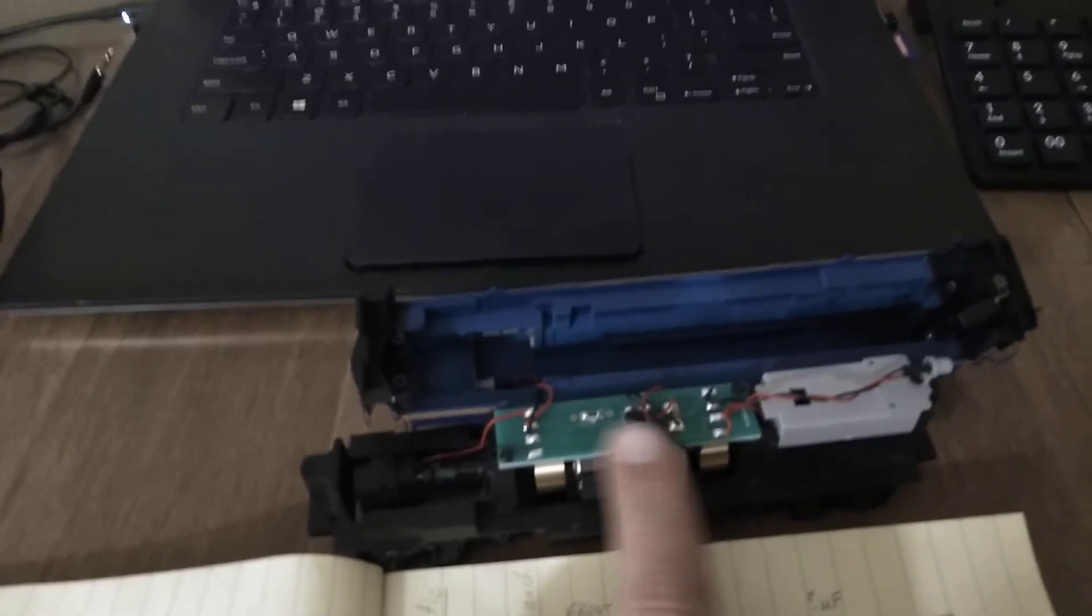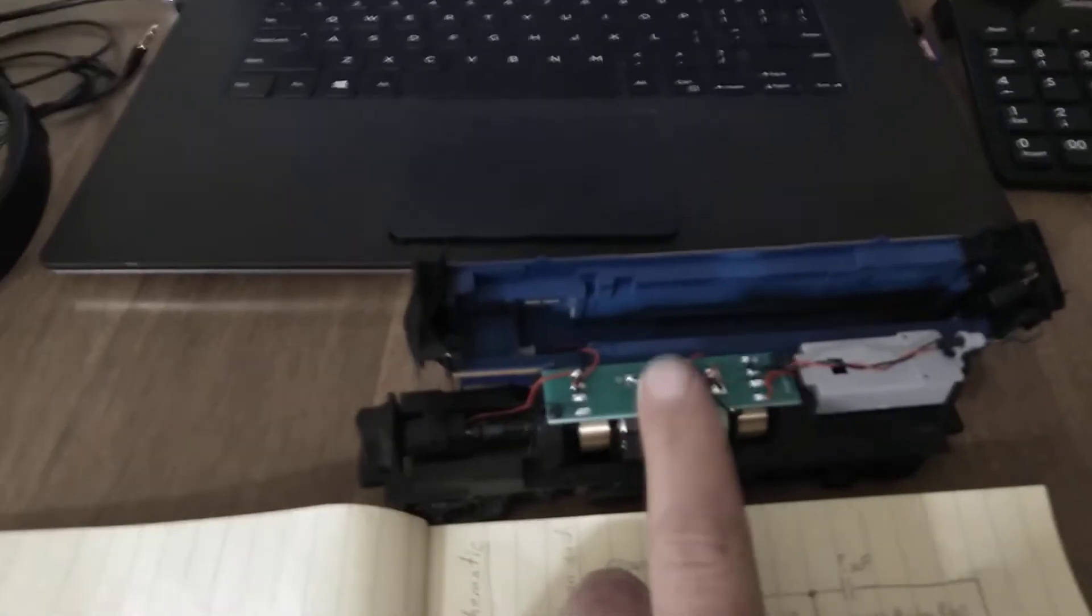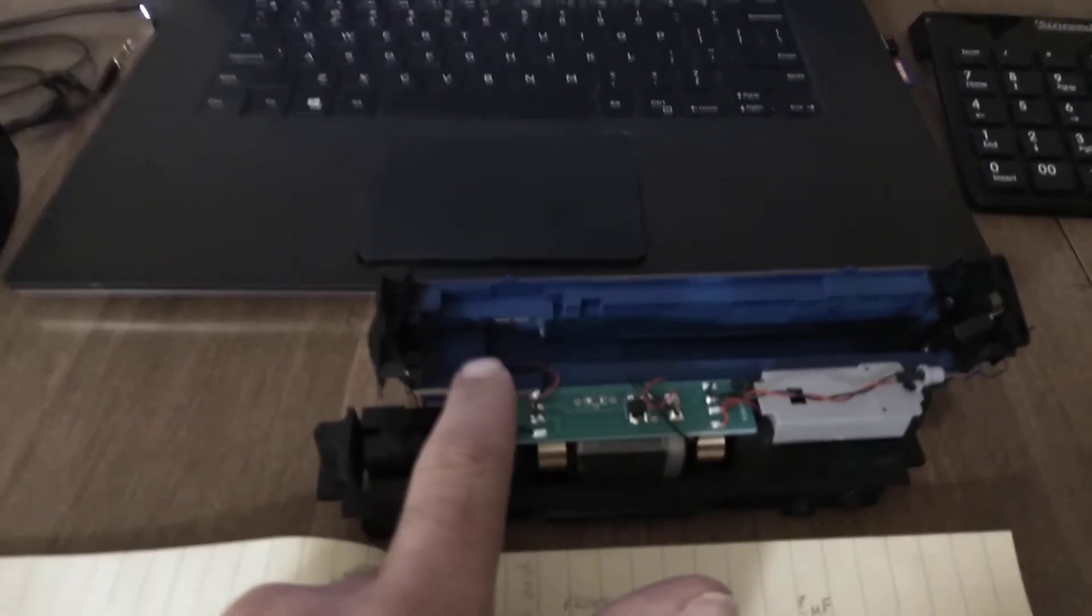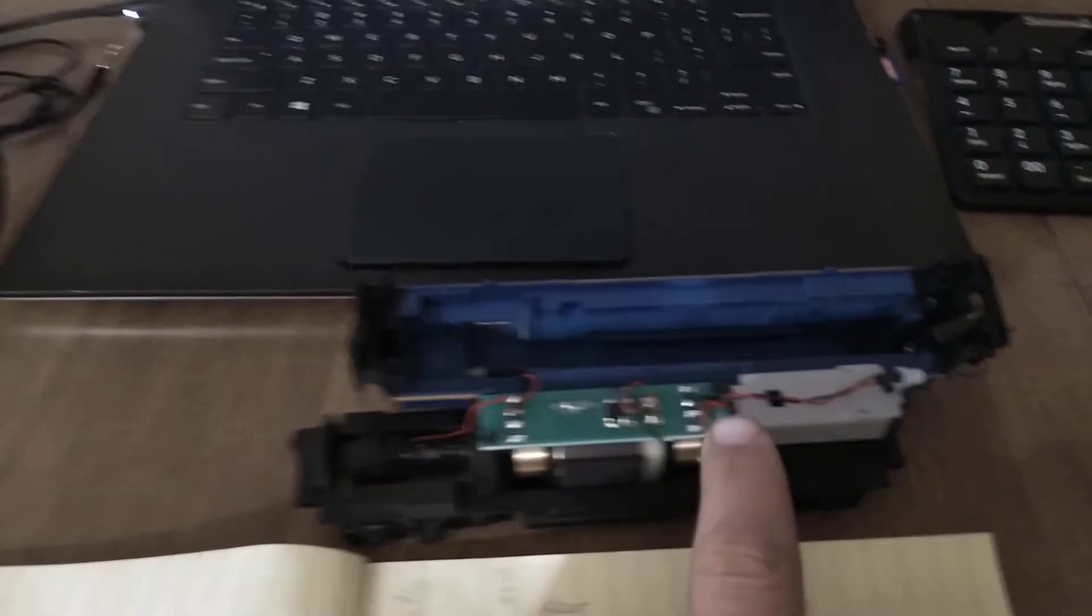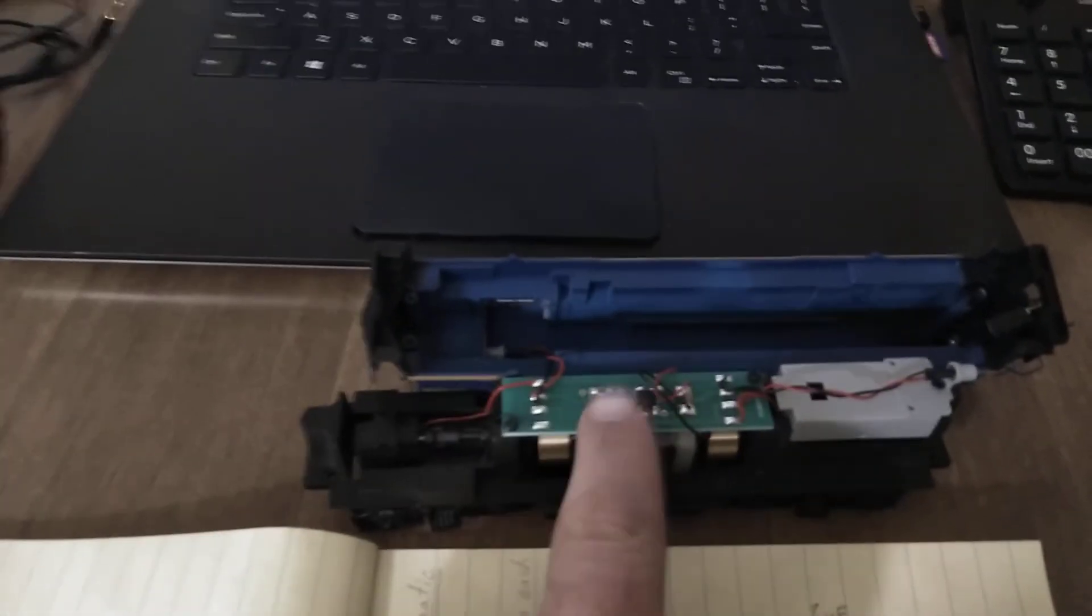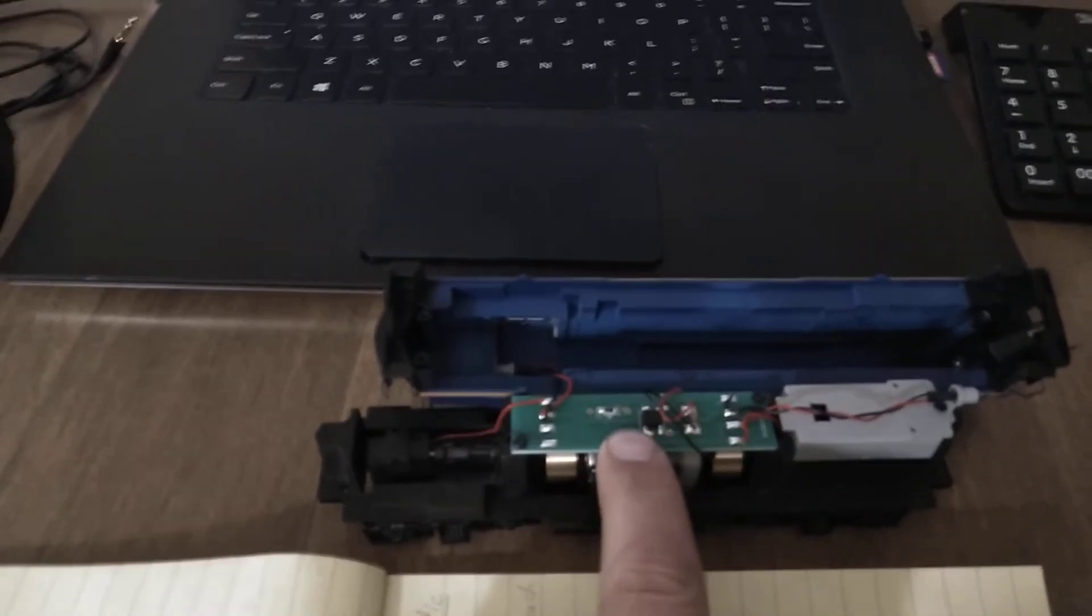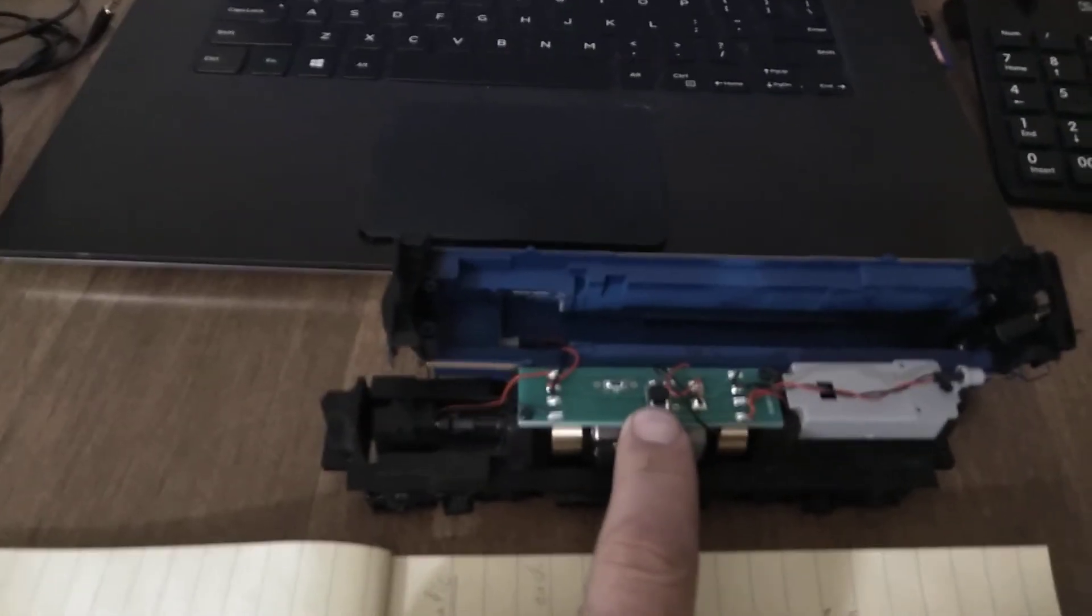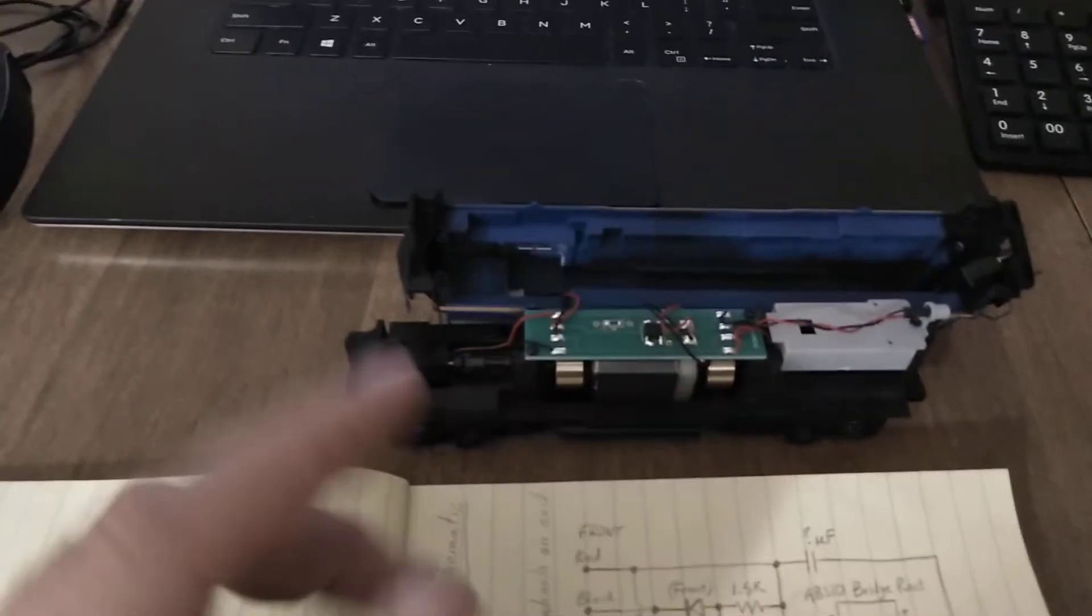We are greeted by this PCB here. Now this locomotive has directional lighting, so when it's going forward the front LED will come on and the back LED will stay off, and vice versa for reverse. So that's what this board right here is handling.